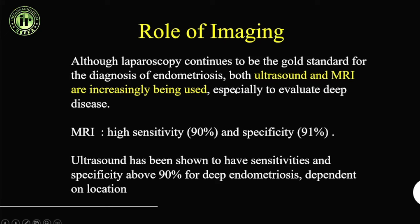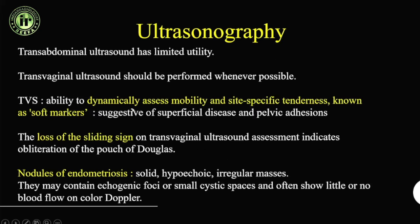The role of imaging is to know the extent of disease, describe where endometriotic implants are present, and also document adhesions as a complication. Two helpful modalities are ultrasound and MRI. Ultrasound will identify these, but MRI will have much higher sensitivity. Initially the patient will have ultrasound done, which also has the advantage of being dynamic.